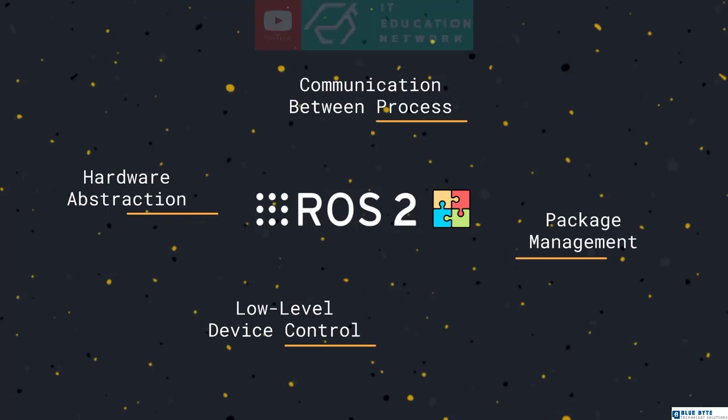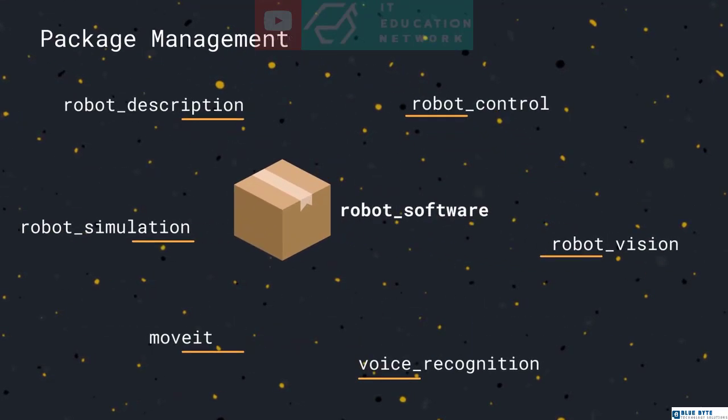To conclude the list of ROS2 features that make it similar to an operating system, in this lesson we will talk about package management. Package management refers to the organization of code and functionalities of our robot into different packages that interact with each other and may rely on functionalities that are implemented in other packages.